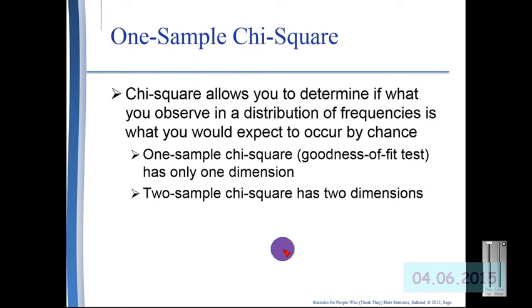The one sample chi-square is often called a goodness of fit test and what it tells us is whether or not the frequencies we are observing in the distribution could be expected to happen by chance or not. We can also do chi-square tests on data that has two dimensions, i.e. two categorical variables.